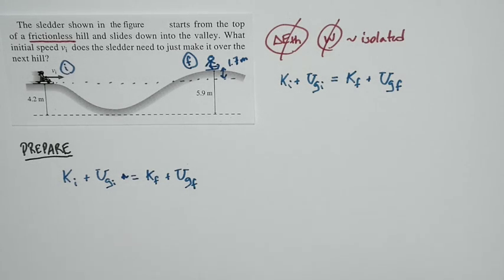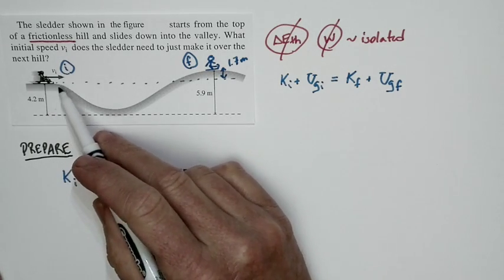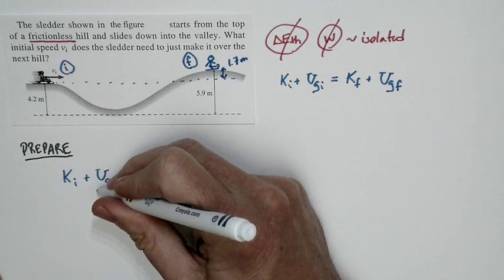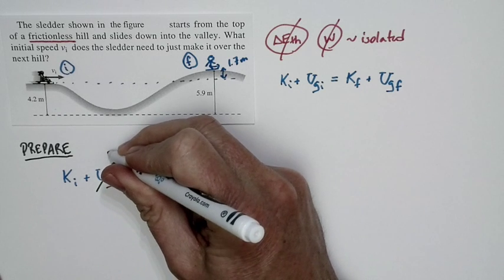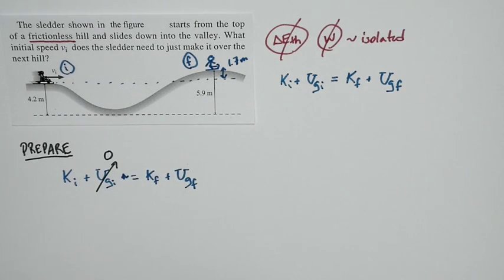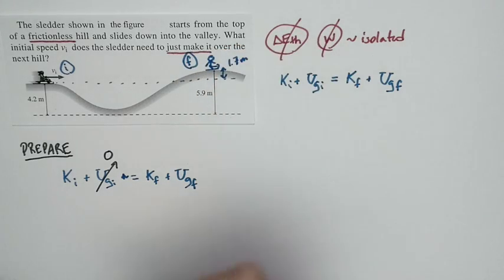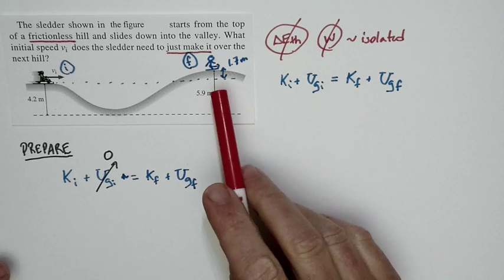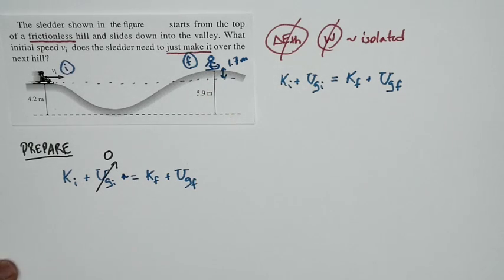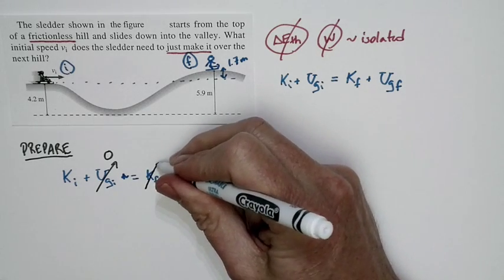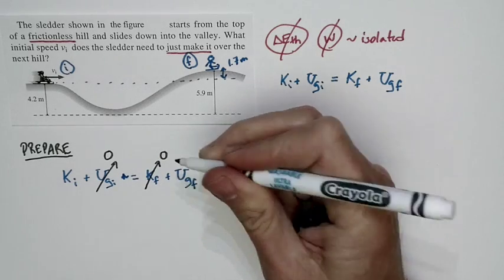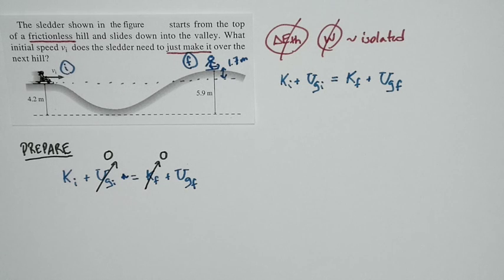Now, we can say some other things. Since we're taking this as our zero of potential energy, the initial gravitational potential energy is equal to zero. We're also told that this sledder just makes it over the next hill. What that means is the velocity is really, really tiny here. And let's take it to be as close to zero as we want. What that tells us is the final kinetic energy is equal to zero. And we're justified to make that approximation.